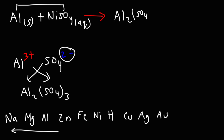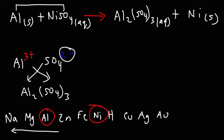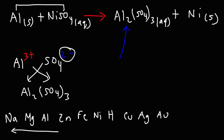Sulfates are generally soluble, with the exception of certain group 2 elements like calcium, barium, and lead. But with aluminum, sulfates are soluble, so this is going to be in the aqueous phase. And nickel is going to precipitate out of the solution — aluminum is much more active than nickel. Now let's balance the equation: put a 2 in front of Al, a 3 in front of NiSO₄. We now have three nickel ions on the left, so we need a 3 in front of nickel on the right. Now our single replacement reaction is balanced.